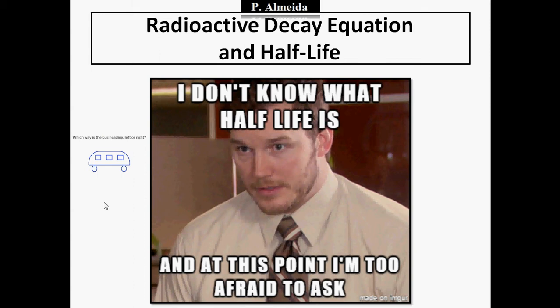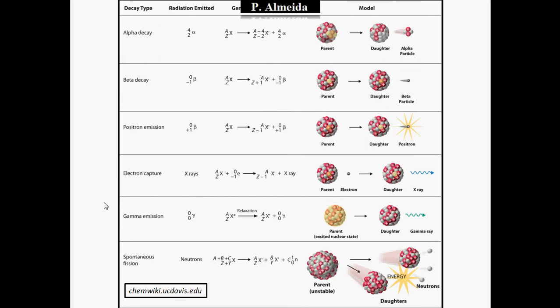Anyway, radioactive decay equation and half-life. I am assuming here that you know all these decay types — alpha decay, beta decay, positron emission, electron capture, gamma emission, and spontaneous fission — and that you know what radiation is emitted, the general equation, and the model. So in this video, I'm assuming you know this. This picture is from this link, okay.